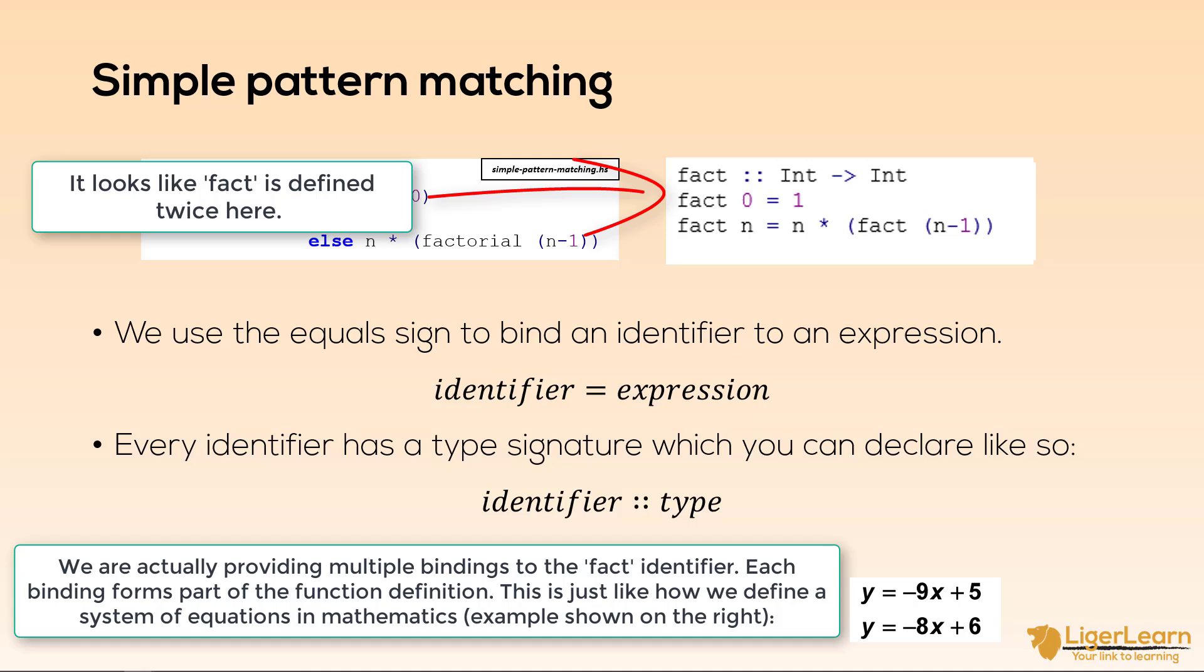Up until now, every code example I have shown only had a single binding for each identifier, but we will now explore how we can use pattern matching to provide as many bindings to the identifier that we like.